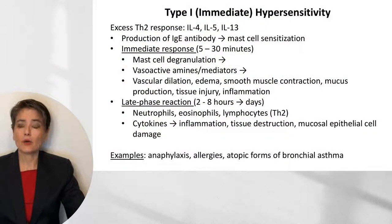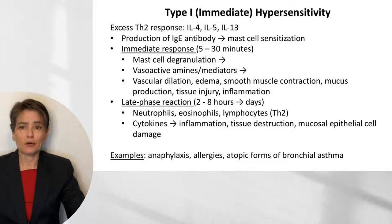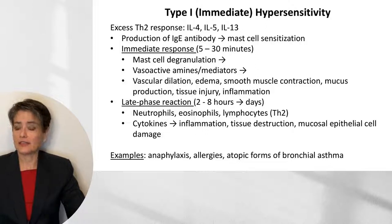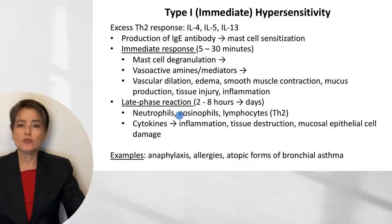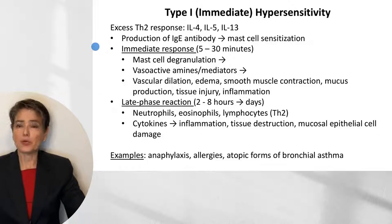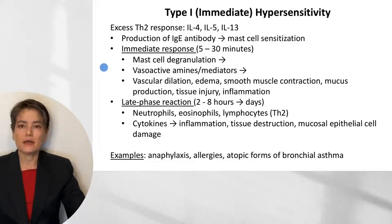Let's begin with type 1, or immediate hypersensitivity. Type 1 hypersensitivity represents an excess Th2 response, where we have elaboration of IL-4, IL-5, and IL-13. These result in the production of an IgE antibody and mast cell sensitization. Once that mast cell is sensitized and we re-expose the individual to that particular antigen, we will get two phases: the immediate response and then a late phase reaction. This immediate response unfolds within 5 to 30 minutes and is set off by mast cell degranulation due to IgE sensitization.